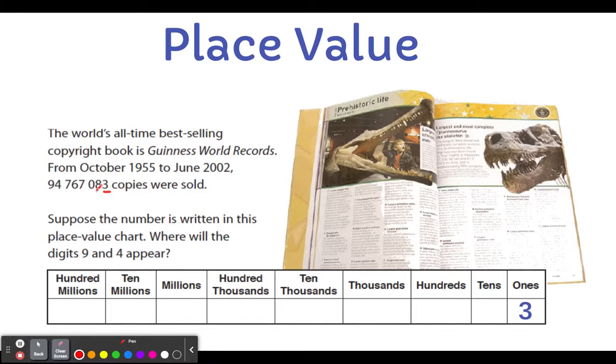Our second digit is an eight. And we're going to put that one in the tens column. Our third digit is very important. It's a zero. And zeros are what we call a placeholder.